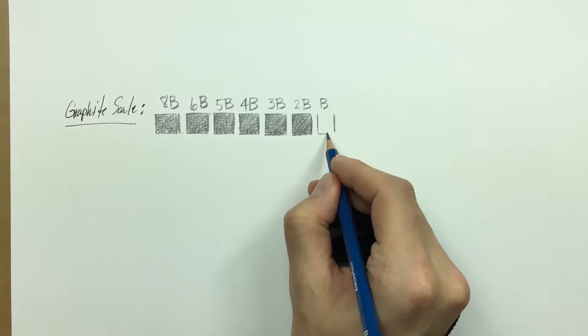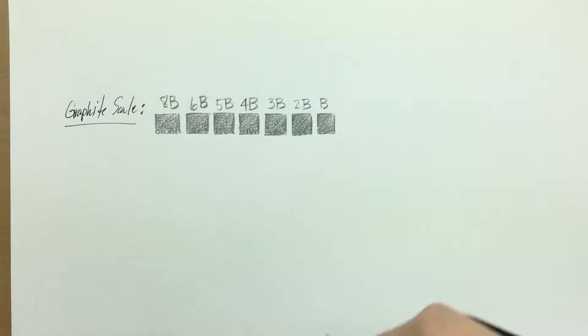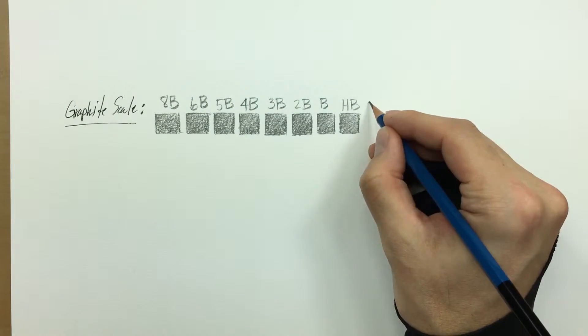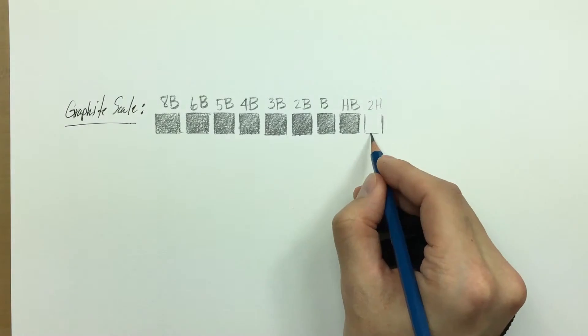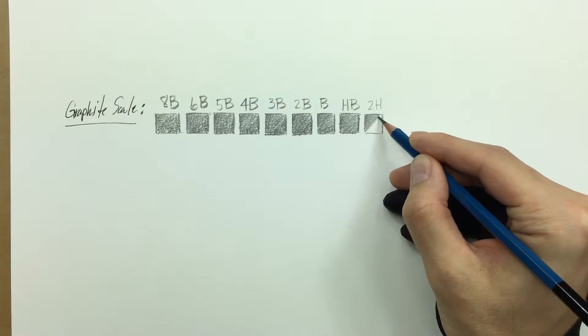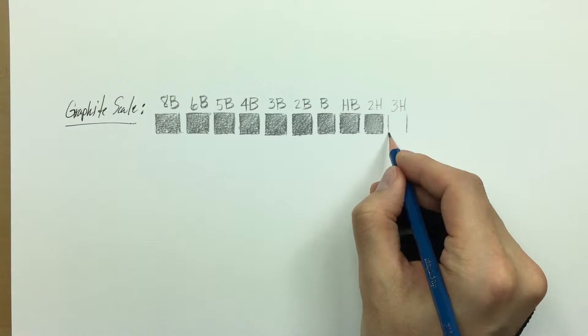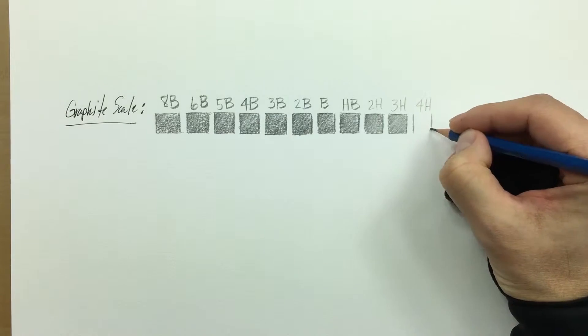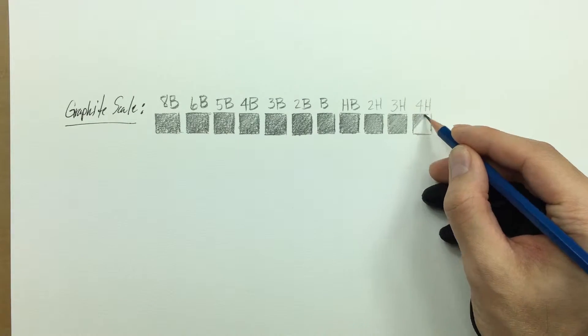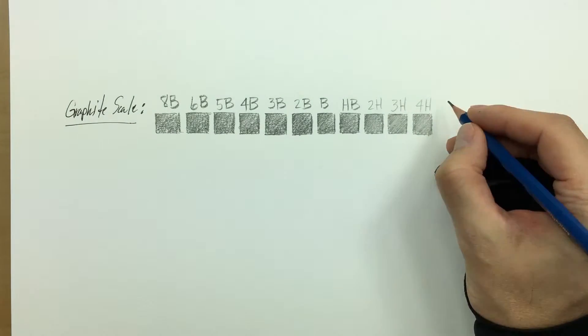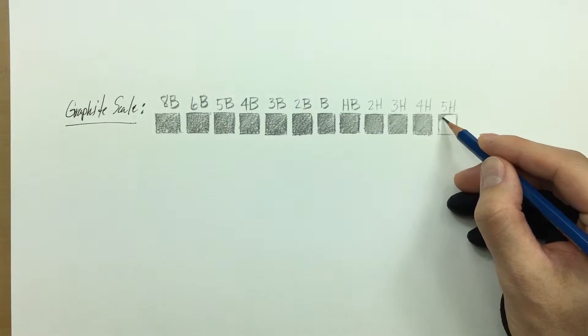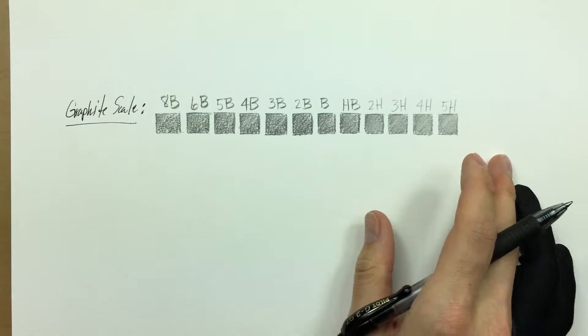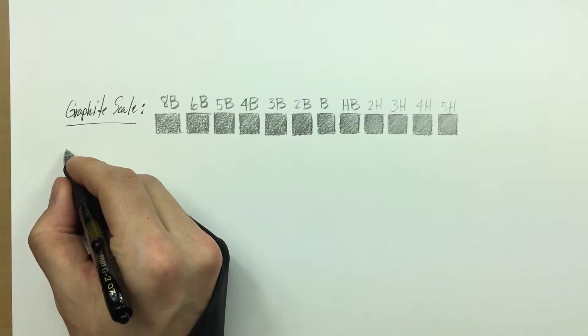What I mean by that is from 8B through 5H you have about three different sub groups that you can utilize. I've identified that 8B, 6B, 5B, 4B, those all belong to what I like to call the soft family. 3B, 2B, B and HB grades are what I like to call the medium family, and then 2H, 3H, 4H and 5H are what I like to call the hard family. I'll show you what I mean by that here in a second, but that's the graphite scale.